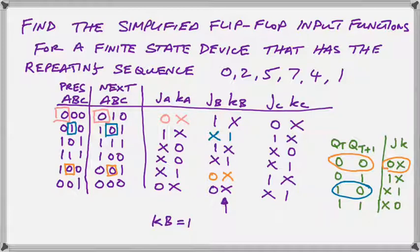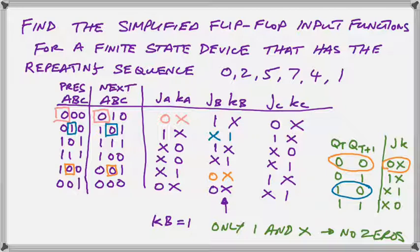Now, we notice that in the Kb column, there are no 0s. You need to look for that. If there are no 0s in any given column, if there are only 1s and xs, that means that that function is 1. So just remember that when you are working it out.